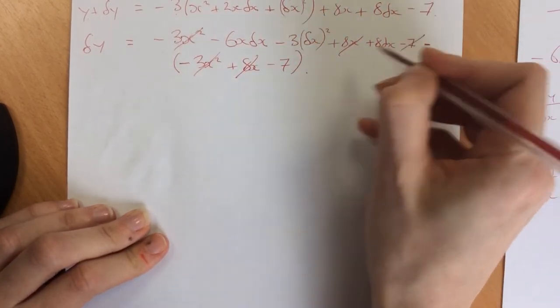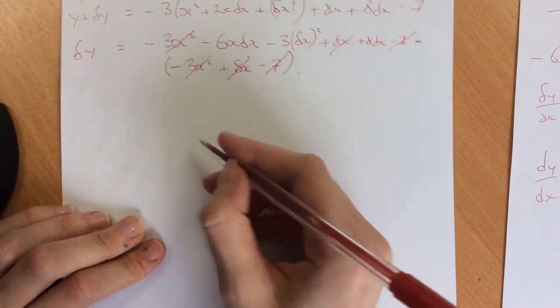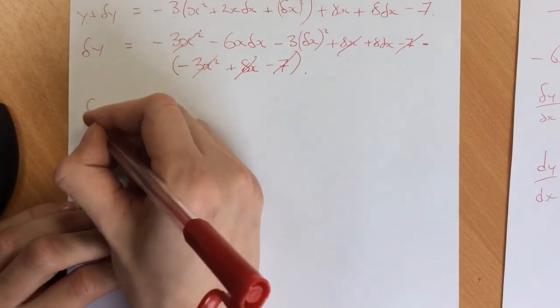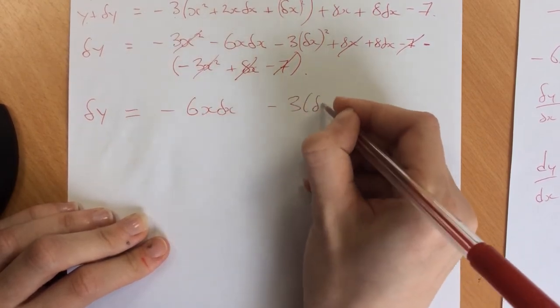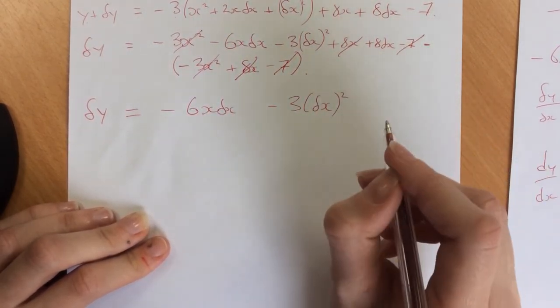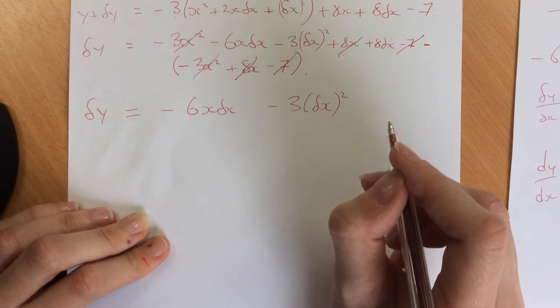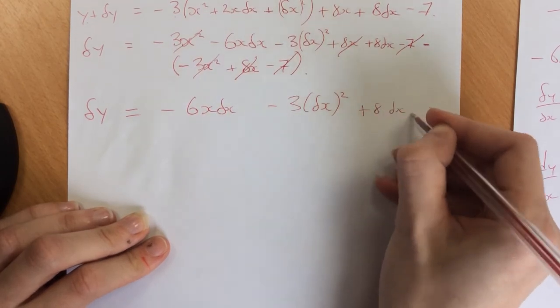And -7 and +7, so they cancel. So I end up with δy = -6x·δx - 3δx² + 8δx.